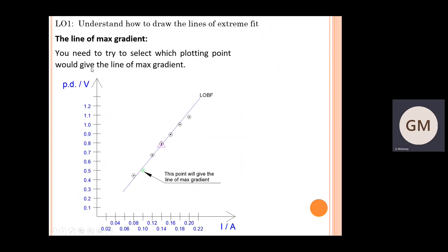Now we need to then try and select which plotting point would give the line of max gradient. You can see from this graph here, it seems like this point that I've shaded in green—if I was to rotate that line of best fit to pass through that point, that's the plotting point that's going to give me the steepest possible gradient.